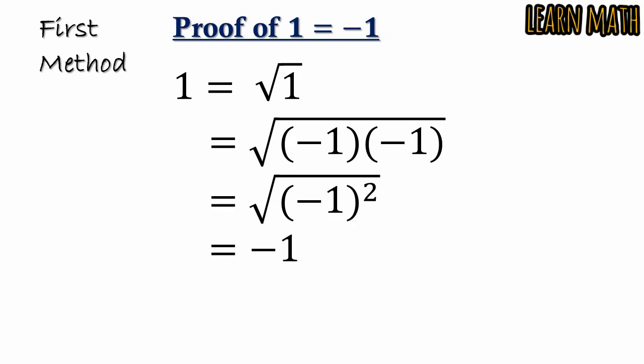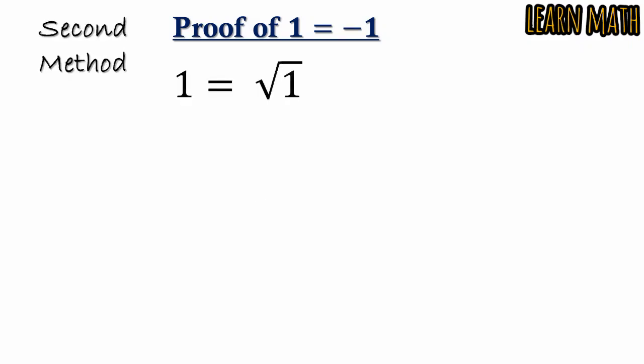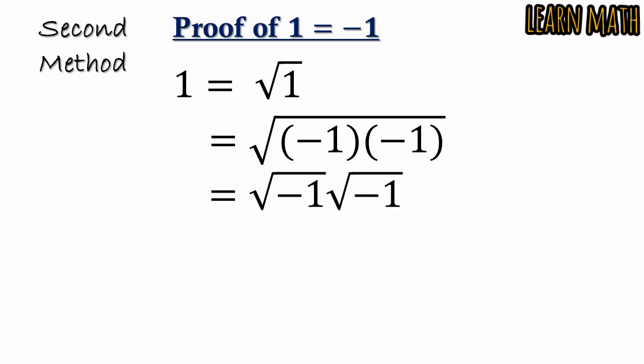This is the proof by first method. The second method is: we will take the same supposition, 1 equals √1. Then we can write it as (-1) × (-1) and then you split it: √(-1) × √(-1). Since √(-1) equals i, you put i here and we get i × i equals i² which equals -1. These are the two proofs people are using to prove this mathematical fallacy. But now I will explain where the mistakes are in these proofs.